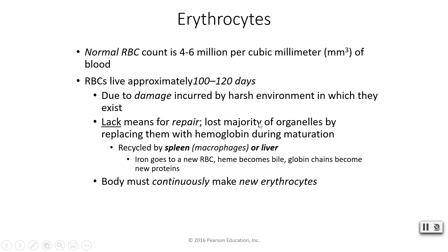Once your red blood cells are damaged beyond repair, they get recycled in your spleen or your liver. We can recycle most of the components — the iron and the heme can be used to create new red blood cells. The heme itself can become part of bile in your digestive system, and the globin chains — the alpha and beta chains — can become new proteins by being broken back down into amino acids.